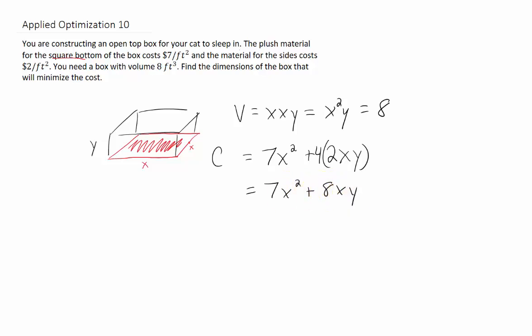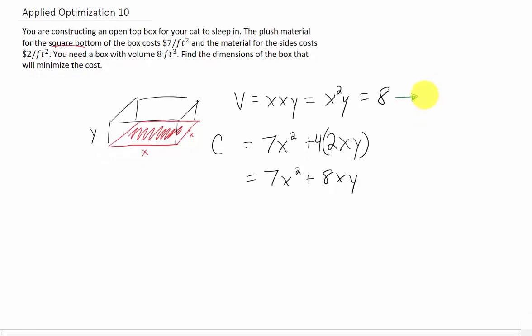Now it's happened again. We came up with a formula that we want to minimize, but it has two variables in it. And we can't deal with that in Calc 1. So what we're going to do is use this first equation that we came up with. We're going to solve it for Y and plug that Y into our formula for our cost.